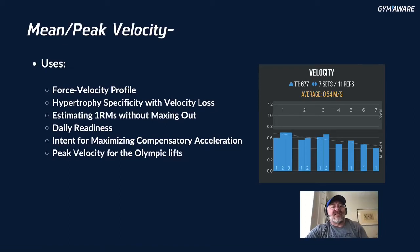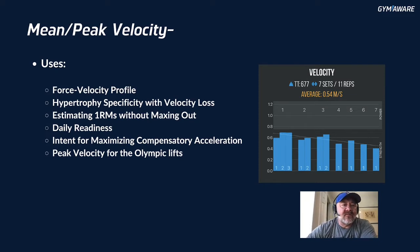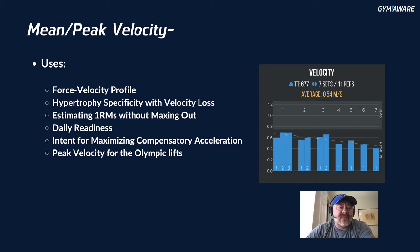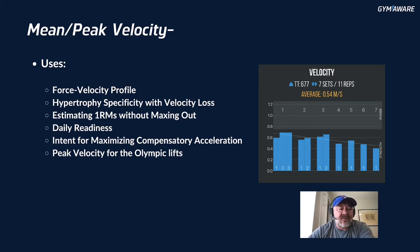Mean and peak velocity — the uses you can get from those two parameters include: the force-velocity profile, which we've talked about in the past and will cover in depth; hypertrophy; specificity with velocity loss; estimating 1RMs without maxing out, which is a big help to our team; daily readiness; intent for maximizing compensatory acceleration, super important for rate of force development and motor unit recruitment; and peak velocity for the Olympic lifts. We'll talk about each.